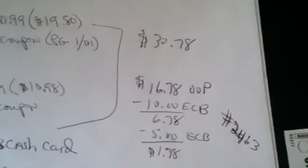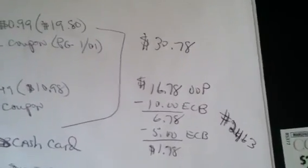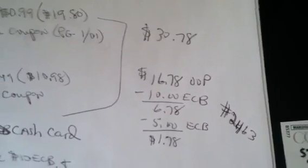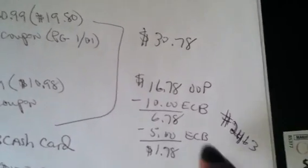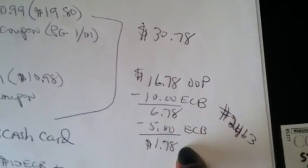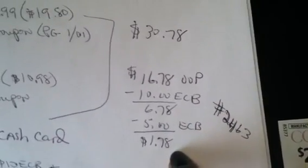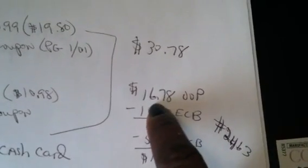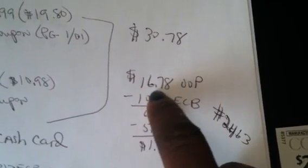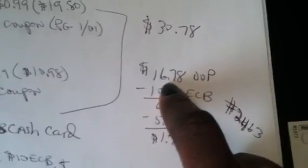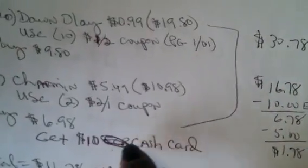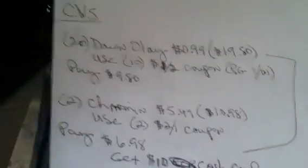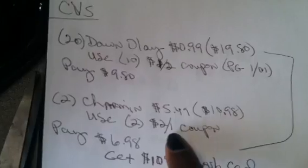So in order to do these $10 deals for these cash cards, like I said, the deals aren't fantastic. You're going to have to have extra care bucks or gift cards already in order to pay for the money you're going to have to pay. So basically, I'm going to pay $0 out of pocket because I have the extra care bucks and a gift card to cover it, but really it's $16.78 that you would pay if you didn't have any extra care bucks to cover it. And then you would get the $10 CVS cash card, which would mean you're really only paying $6.78 for 20 Dawn Olays and two Charmins.